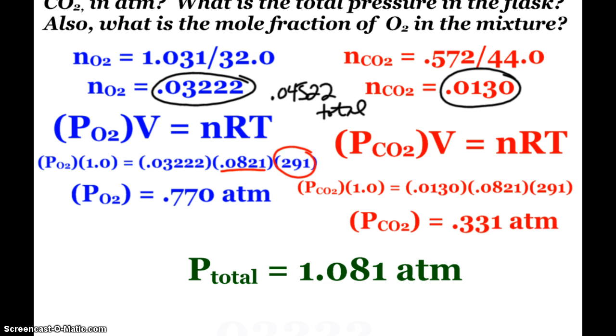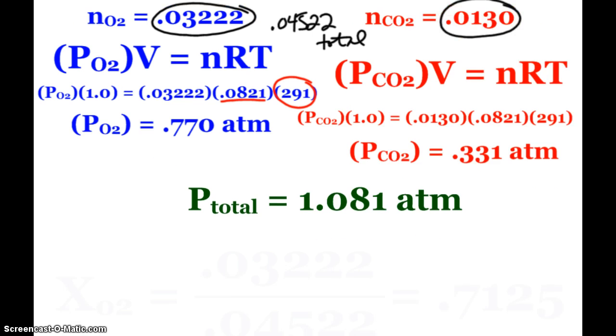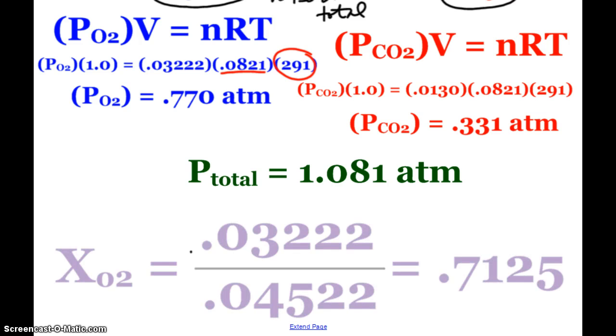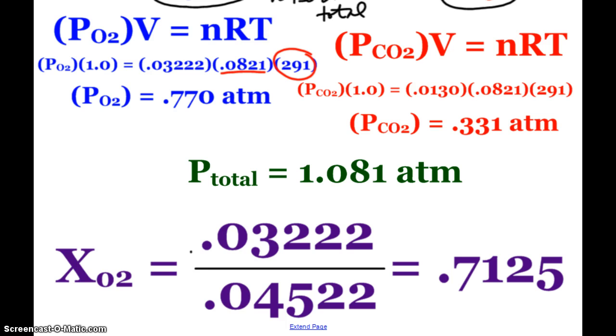Now, it asks for the mole fraction of oxygen, so in order to do that, I simply take the moles of oxygen, 0.03222, divided by the total that we just figured out, 0.04522, and I just leave it as a unitless expression. The mole fraction of oxygen is 0.7125, 71.25% oxygen in this mixture.